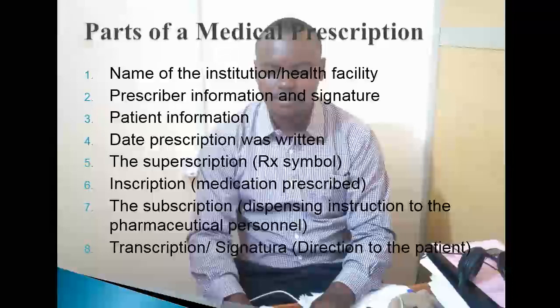Kwa muhtasari, sehemu za medical prescription ni: name of the institution or its facilities, prescriber information and signature, patient information, date prescription was written, taarifa za mgonjwa wote kama unavyohitajika, maelekezo ya dawa, na inscription inayoonyesha prescriber aliandika nani — title, cheo, au qualification ya aliyeandika dawa. Pia lazima kuwe na maelekezo kwa mtengenezaji au mtumiaji wa dawa — pharmaceutical personnel — ambayo ni subscription.